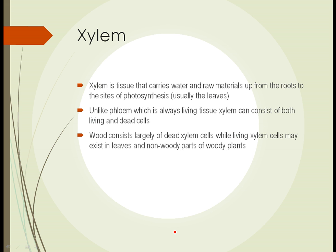Wood in trees or woody plants like shrubs and some woody vines consists largely of dead xylem cells, while living xylem cells may exist in the leaves and non-woody parts of woody plants. So some plants have entire sections of their xylem made from dead xylem cells, and living cells only in certain areas of the plant.